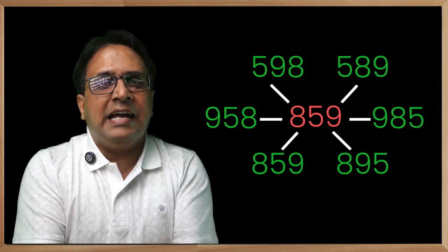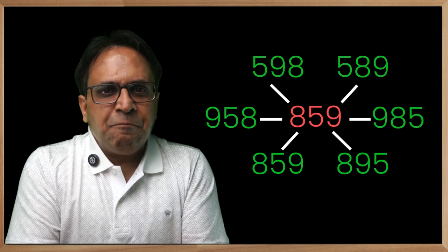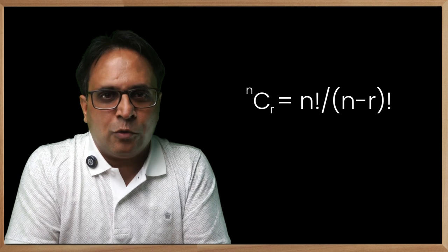958 and 985. Still doable, but if the digits increase further it becomes impossible. Thus, for such problems we come across a concept called combination with the formula nCr = n! / (n - r)!.